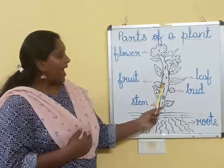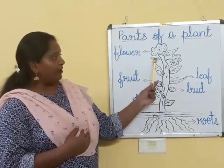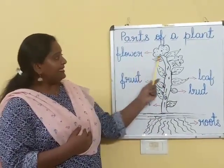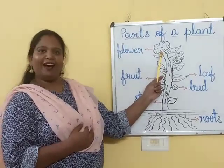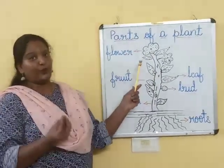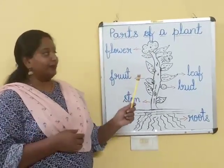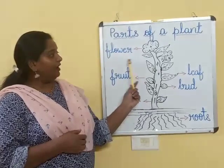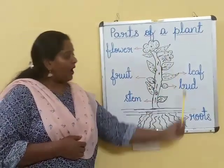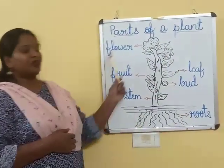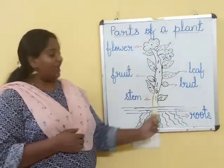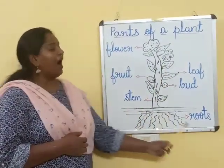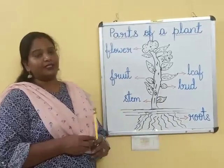Now as we move forward, this is a flower — a flower which grows from a bud. So now as we have learnt the various parts of the plant and what are their importance.